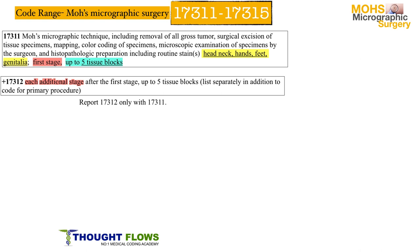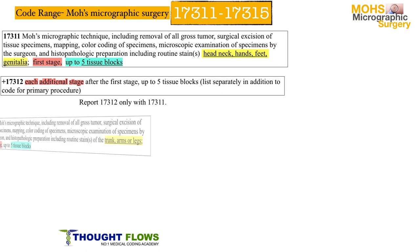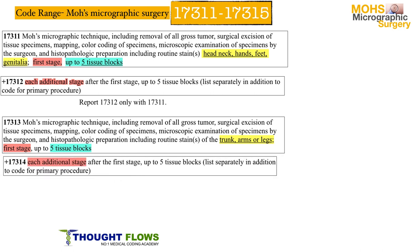Code 17312 is an add-on code and always depends on 17311. For example, for location neck, if the doctor did stage one with five blocks and stage two with five blocks, the answer is 17311 for stage one and 17312 for stage two. For different locations like trunk, arms, and legs, we use code 17313 — this is also for the first stage and includes up to five tissue blocks.